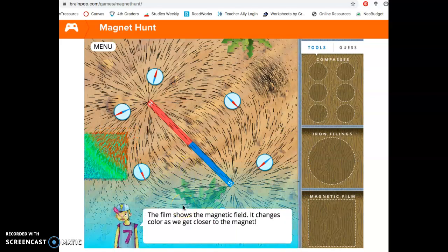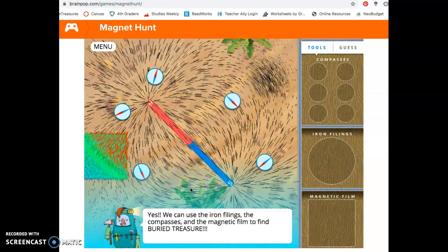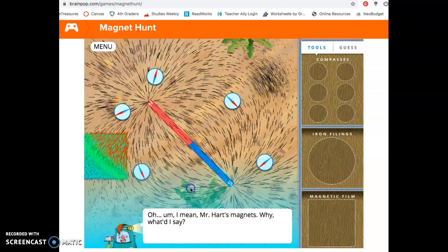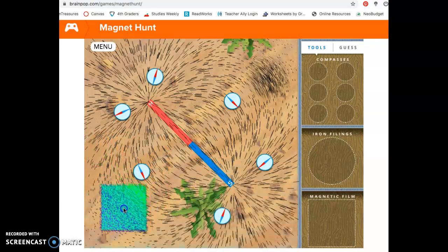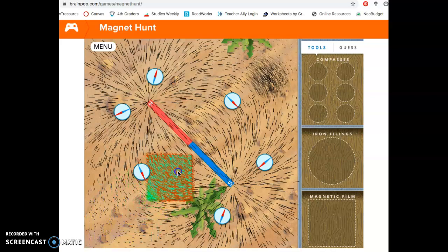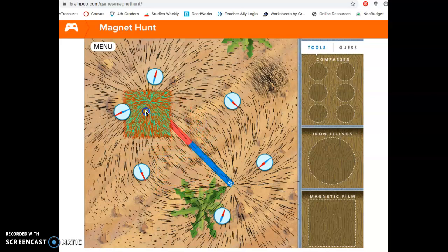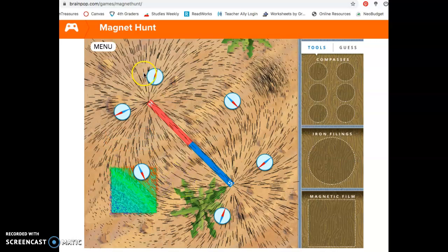The film shows the magnetic field. It changes colors as we get closer to the magnet. Oh, that makes sense. Yes, we can use the iron filings, the compasses, and the magnetic film to find buried treasure. Wait, buried treasure? Oh, I mean, Mr. Hart's magnets. Why, what I'd say. Never mind. So, you can see there. The closer you get, the redder it gets to the magnetic field.